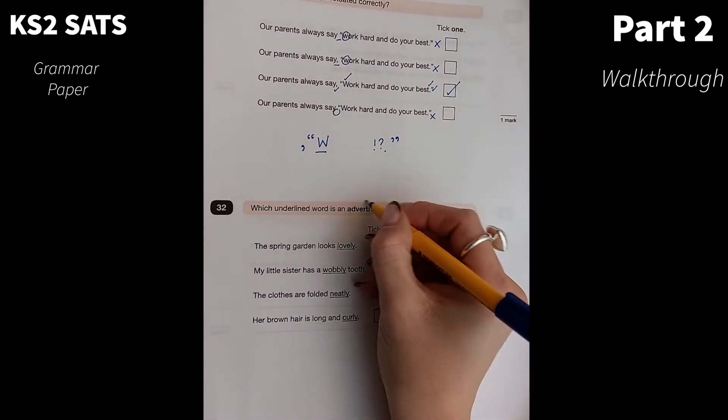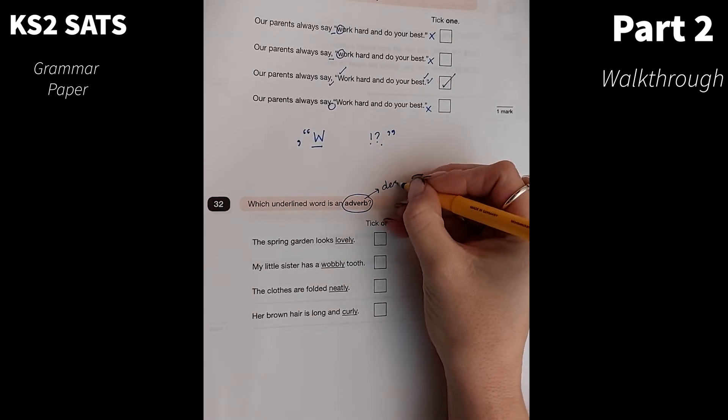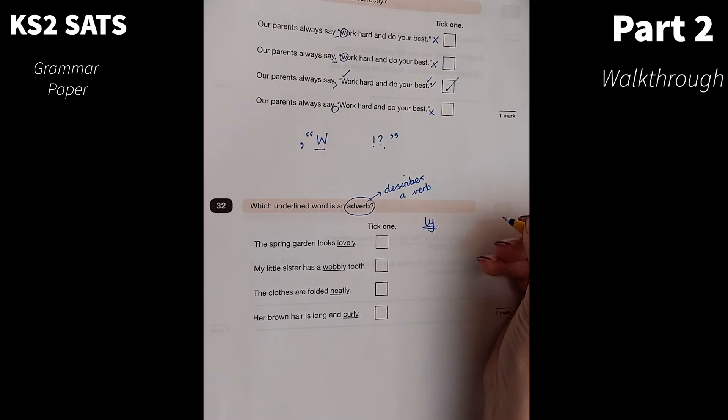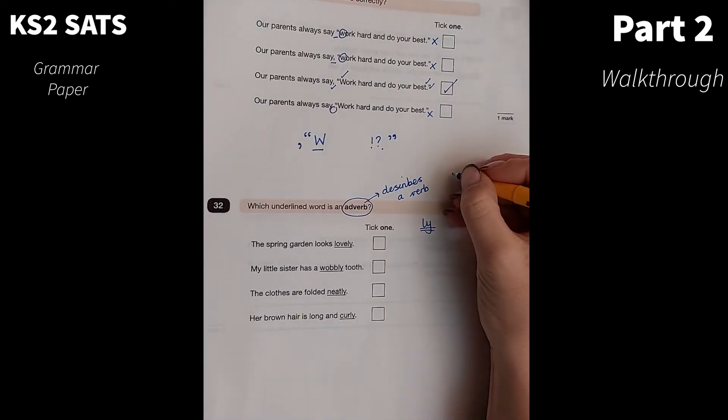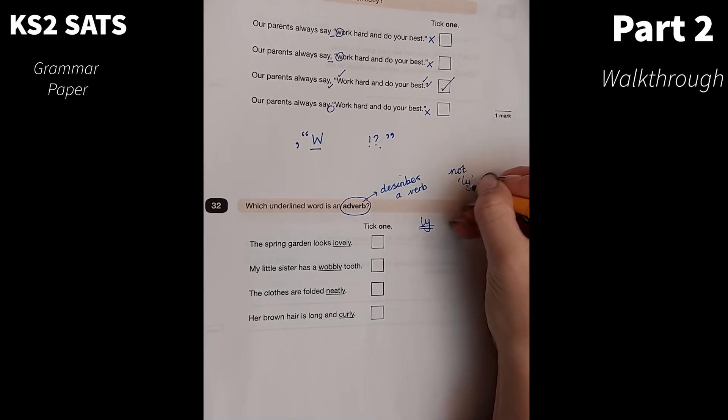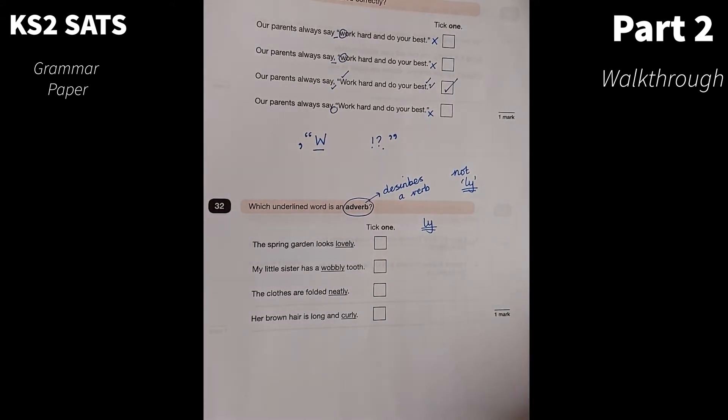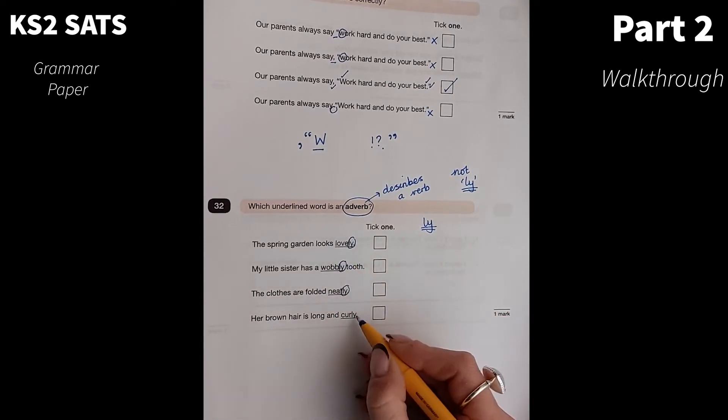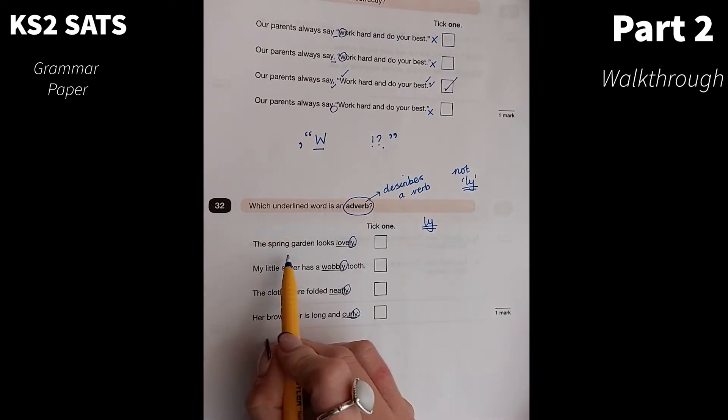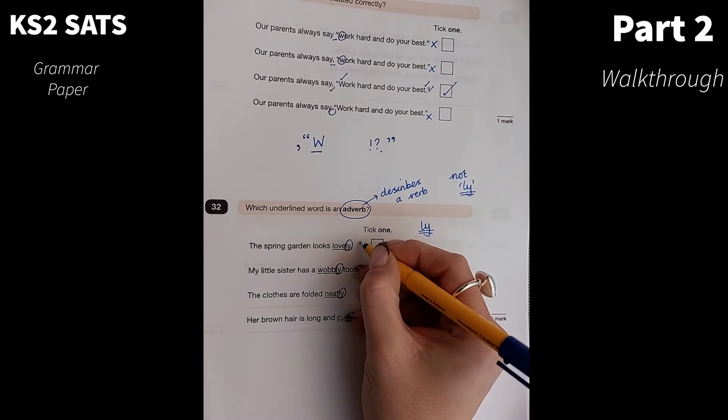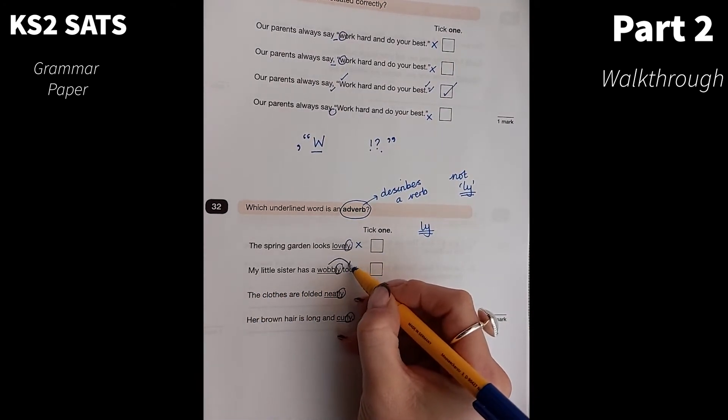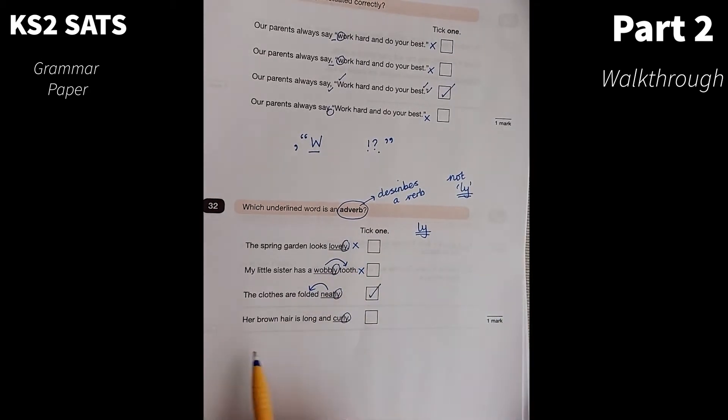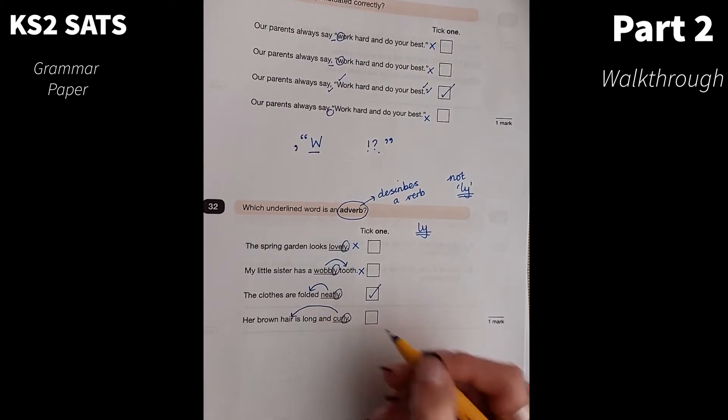Which underlined word is an adverb? I know that an adverb describes a verb. Usually, we teach children to recognise that adverbs usually end in L-Y. But not always. It is important in year six that you do explore adverbs that don't end in L-Y. So I would say that would be some advice for me. Go and look at some adverbs that don't end in L-Y. But what they've tried to trick you by doing is giving all of those underlined words that end in L-Y, and not all of them are adverbs. Some of them are adjectives. The spring garden looks lovely. Well, we're saying that the garden looks lovely. So that's going to be an adjective. My sister has a wobbly tooth. That describes the tooth. The clothes are folded neatly. The word neatly describes how the clothes are folded. So that is an adverb there.